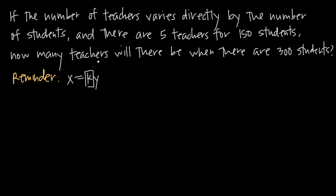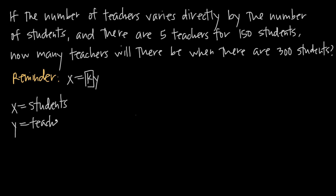The problem says: if the number of teachers varies directly with the number of students and there are five teachers for 150 students, how many teachers will there be when there are 300 students? We know to use the direct variation formula. We assign students to x and teachers to y — write down this key so you stay consistent throughout the problem.